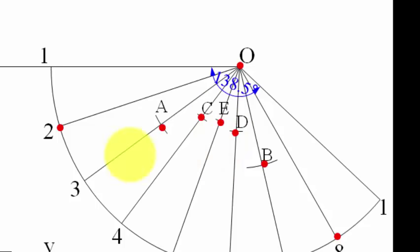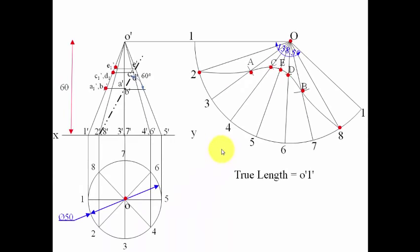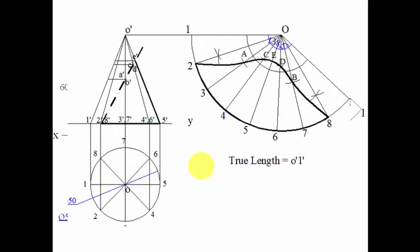Only thing left is to join all these points in the proper sequence with the help of a smooth curve. That's the development of the cone over here. Now, I need to tell you which portion is to be darkened. Initially, all the drawing that we have made can be carried out with the help of a 3H pencil. Finally, the portion which is to be darkened should look something like this, and it has to be carried out with the help of an HB pencil. This portion below the cutting plane has to be darkened.